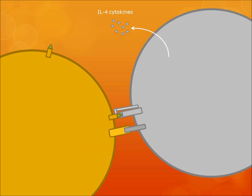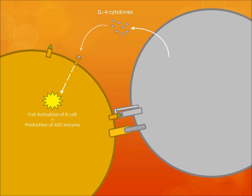The T cell tells this to the B cell by releasing IL-4 along with other cytokines. Specifically, IL-4 binds with the receptor on the B cell and tells it to begin making antibodies to neutralize the pathogen. This results in the full activation of a B cell.